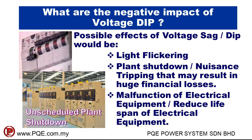What are the negative impacts of voltage dip? These include flickering, unscheduled plant shutdown due to nuisance tripping which may result in huge financial losses, and malfunction of electrical equipment due to after-match high surge current when the voltage supply resumes.